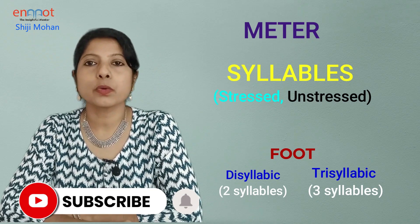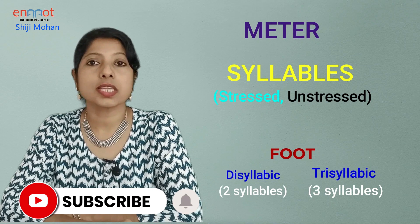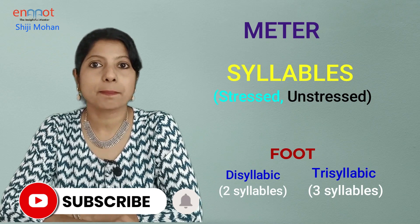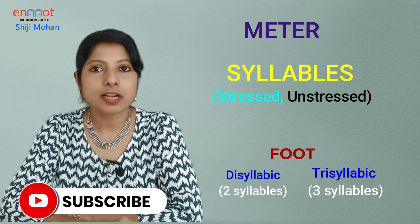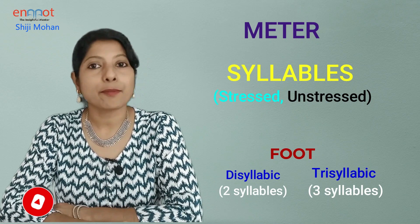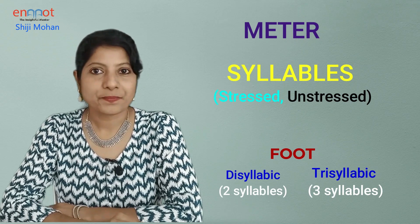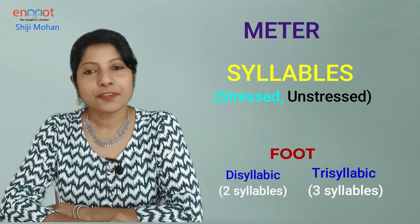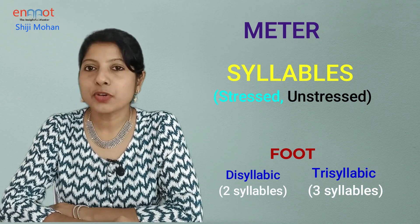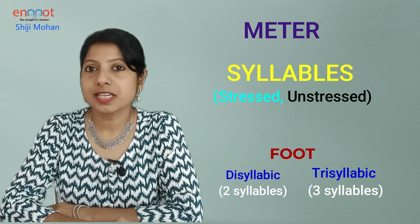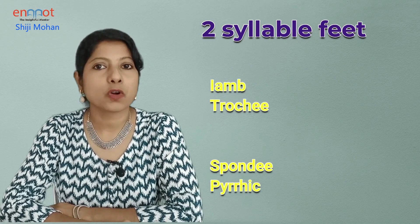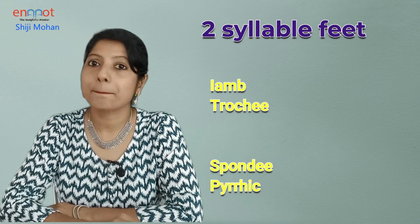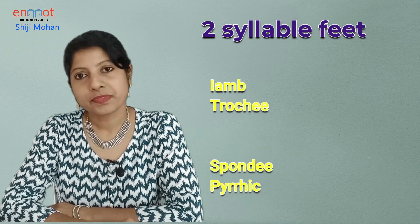In this video we are going to focus on the trisyllabic metrical feet such as amphibrach and amphimacer, but before that just have a look at the two-syllabic metrical feet such as iamb, trochee, spondee, and pyrrhic.